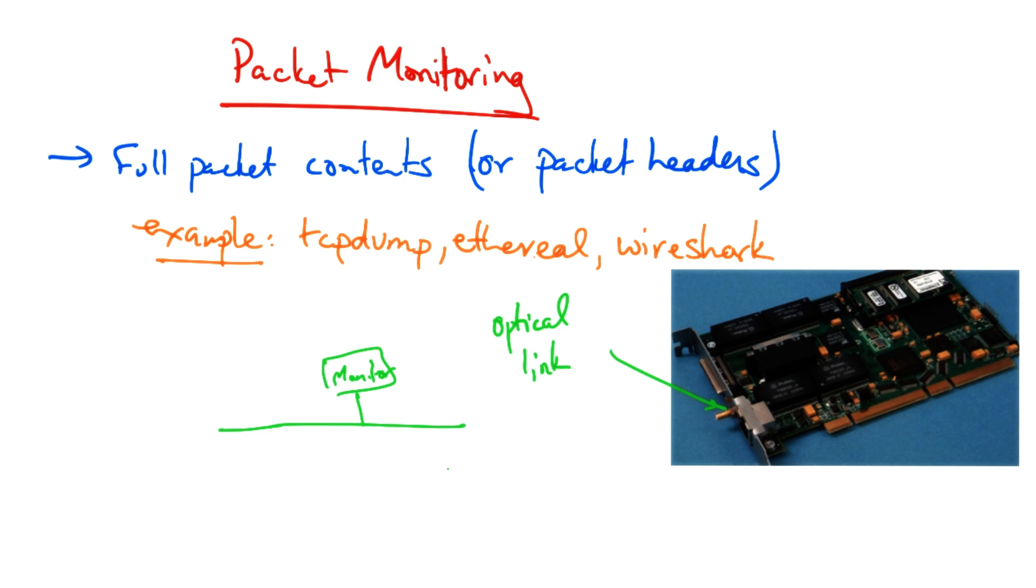Even though packet monitoring sometimes requires this expensive hardware on very high speed links, what you do when you run TCP dump or Wireshark or Ethereal is essentially the same thing. Your machine acts as a monitor on the local area network, and if any packets happen to be sent towards your network interface, the network interface records those packets.